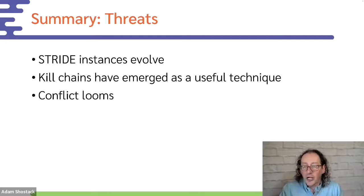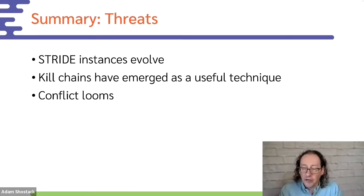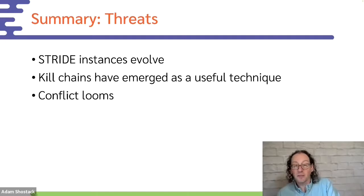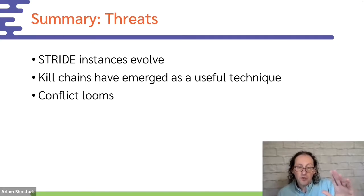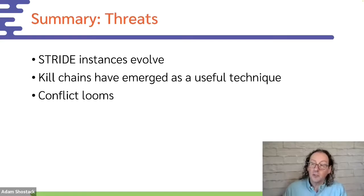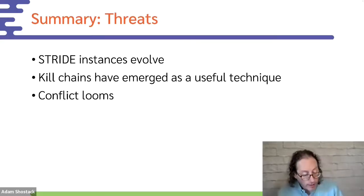To summarize: the instances of STRIDE are evolving. Kill chains have emerged as an incredible technique to help us think about operational systems. Conflict is looming. But the question of 'what can go wrong' absolutely still helps us in 2022 and will still help in 2023. The fundamental skills of threat modeling remain important — the systems we engineer continue to be attacked, and conflict modeling is going to become increasingly important.